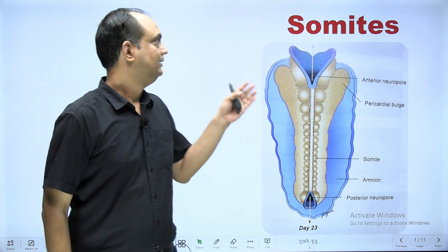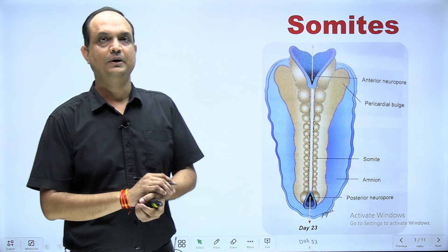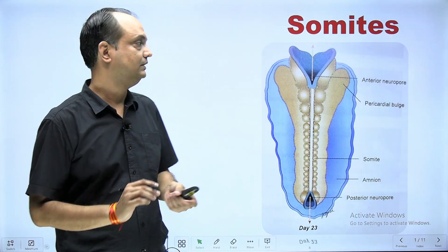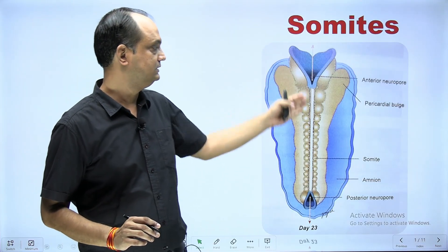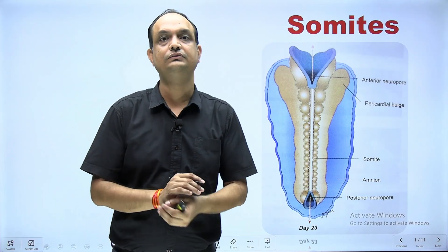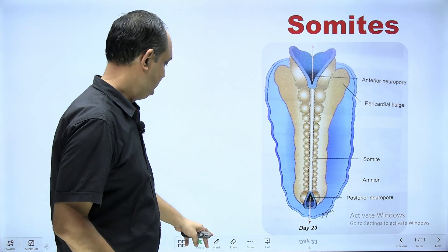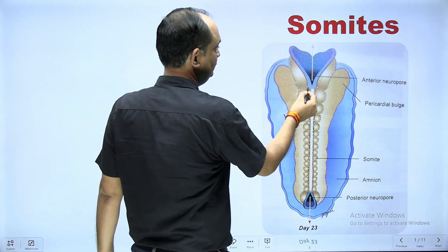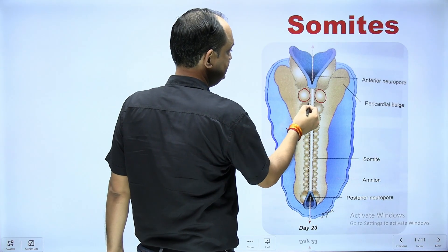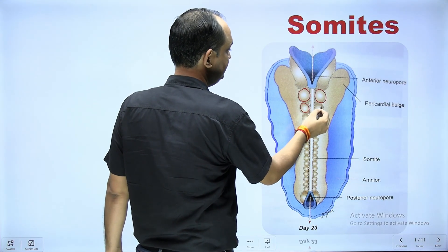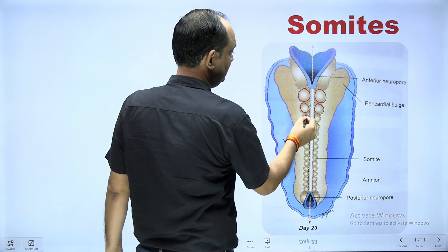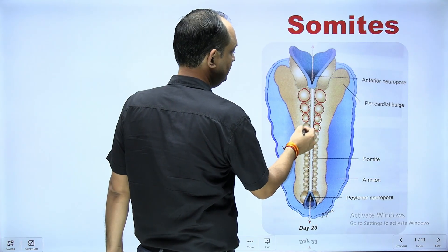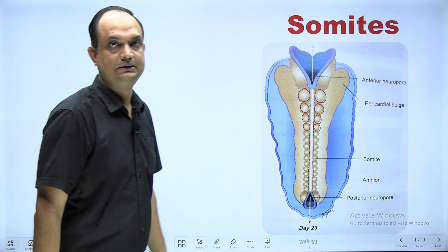Hello students, today we will discuss about the somites. When you look at the dorsal surface of the embryo, in the midline on both sides, you are able to appreciate these round elevations. These round elevations are known as somites.